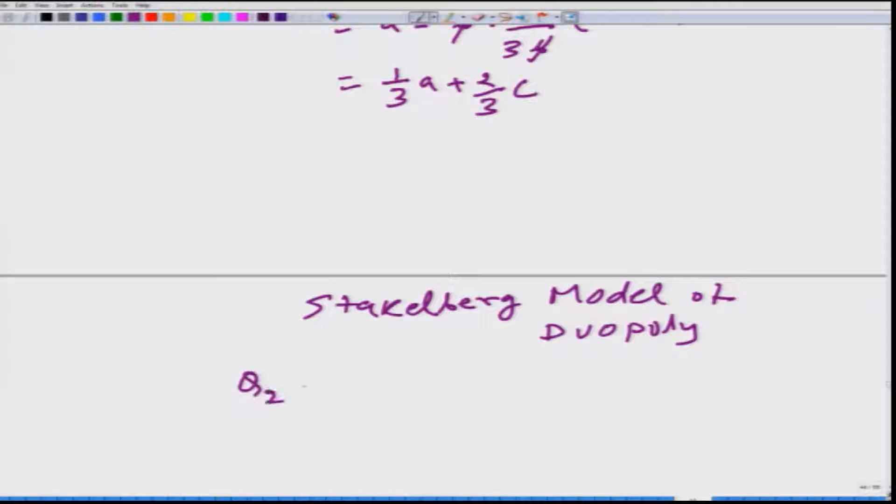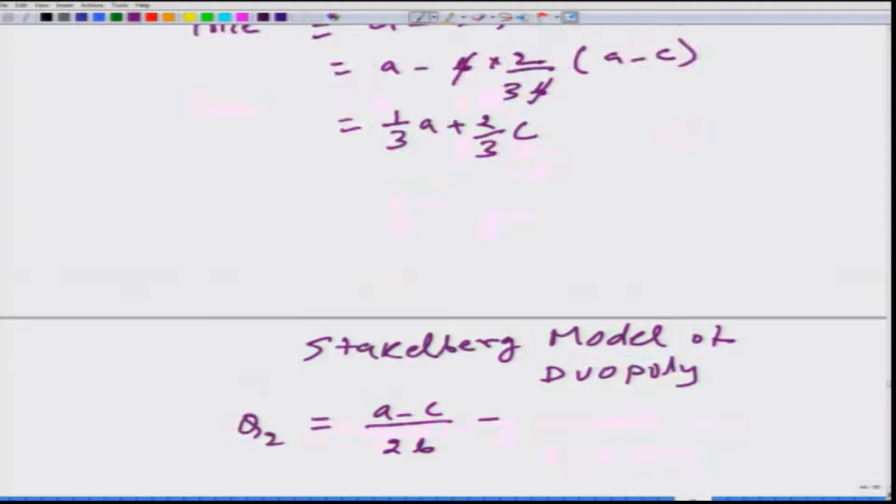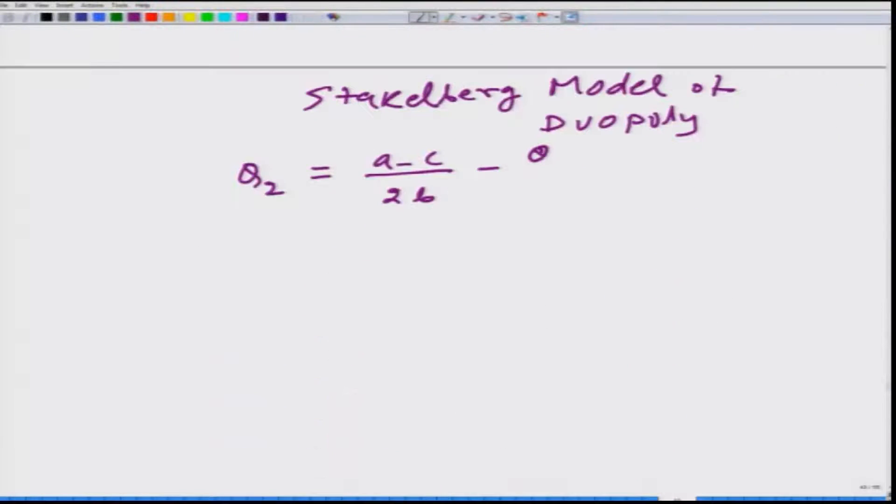So Q2 is going to be a function of A minus C divided by 2B minus Q1 by 2. There is no hat here because firm two knows how much firm one has produced. Now, let us think about the optimization problem or the profit maximization problem of firm one.